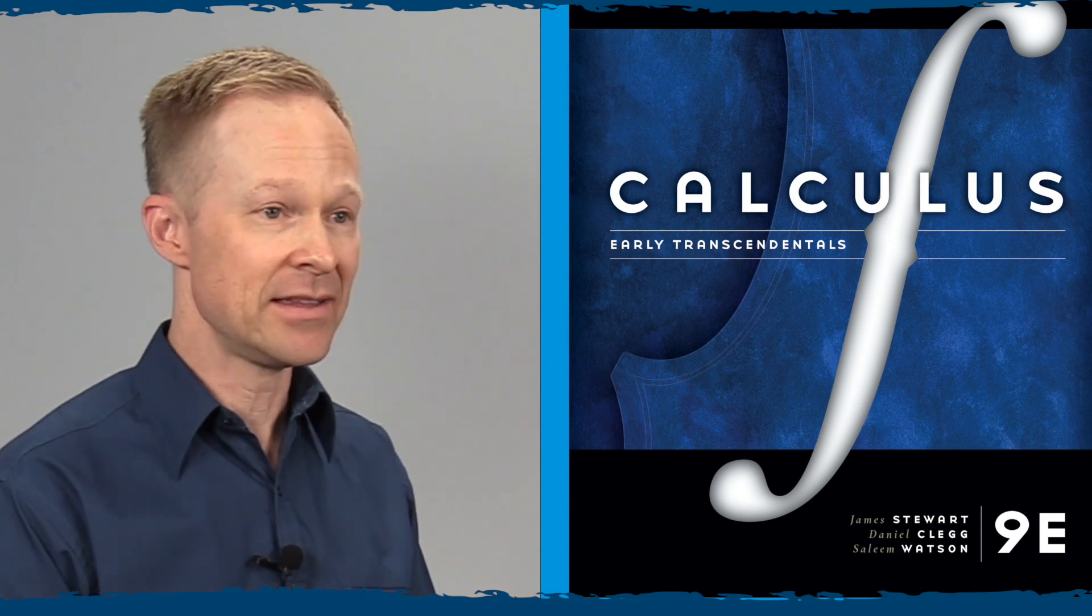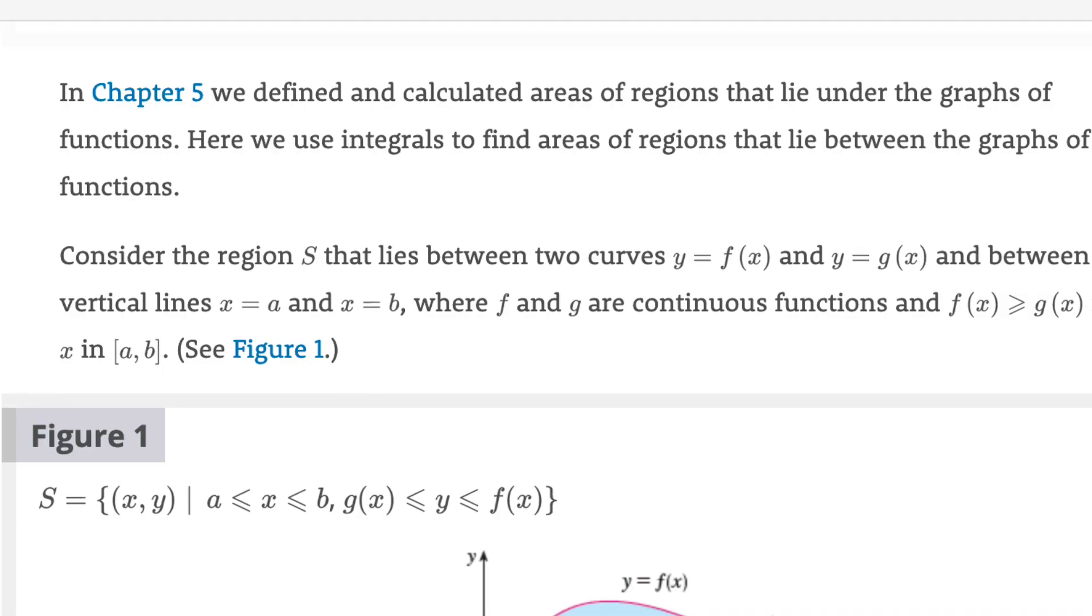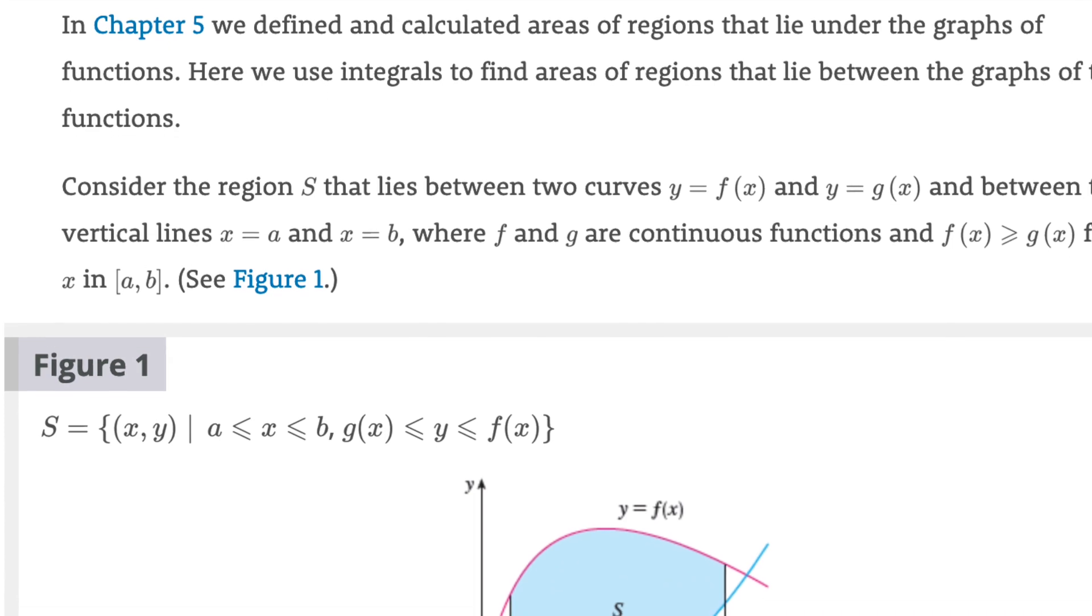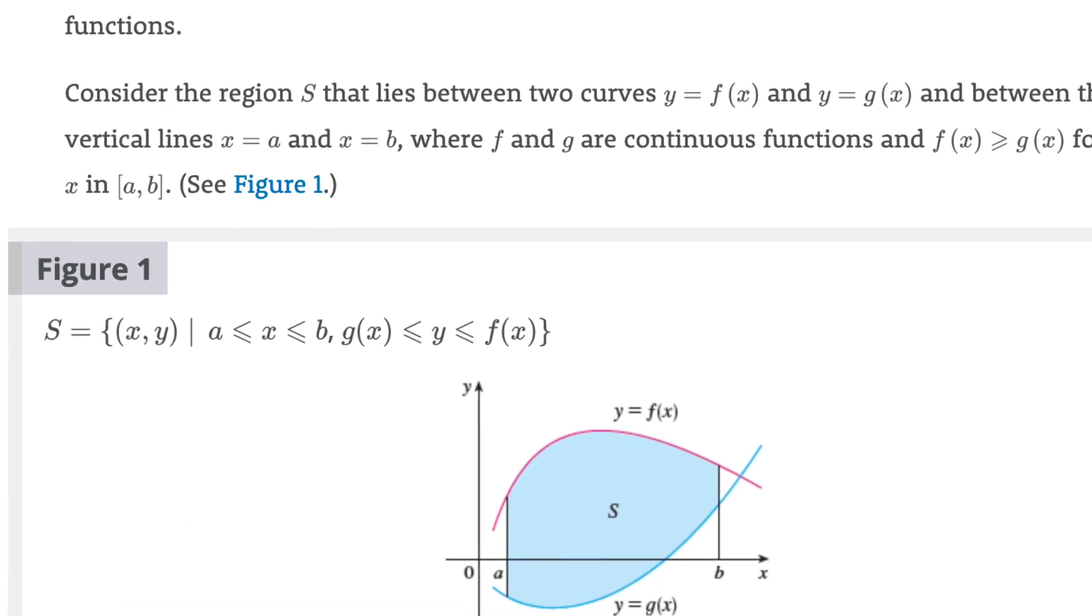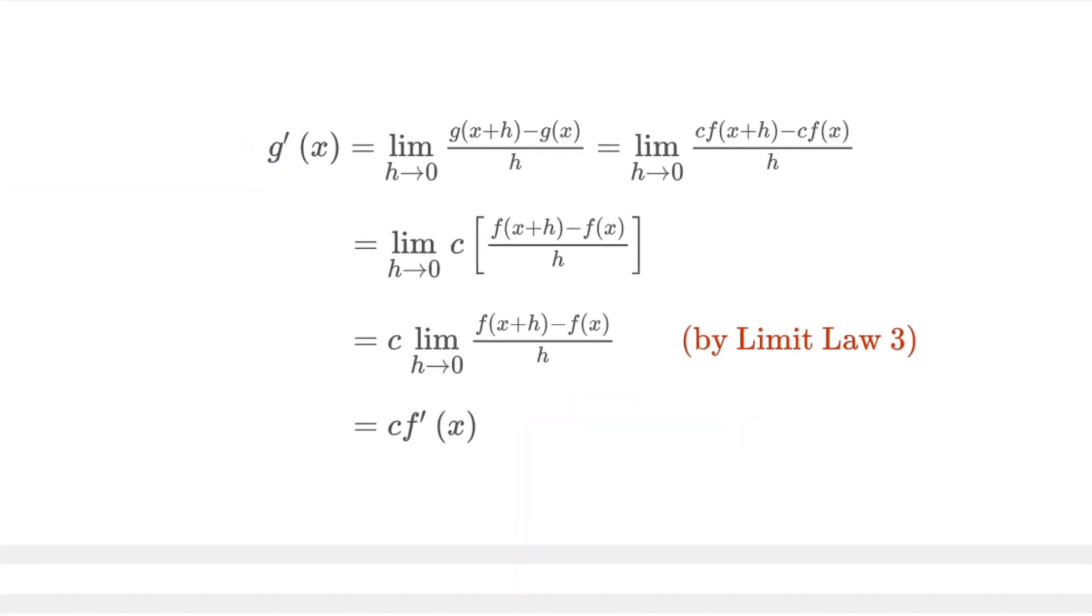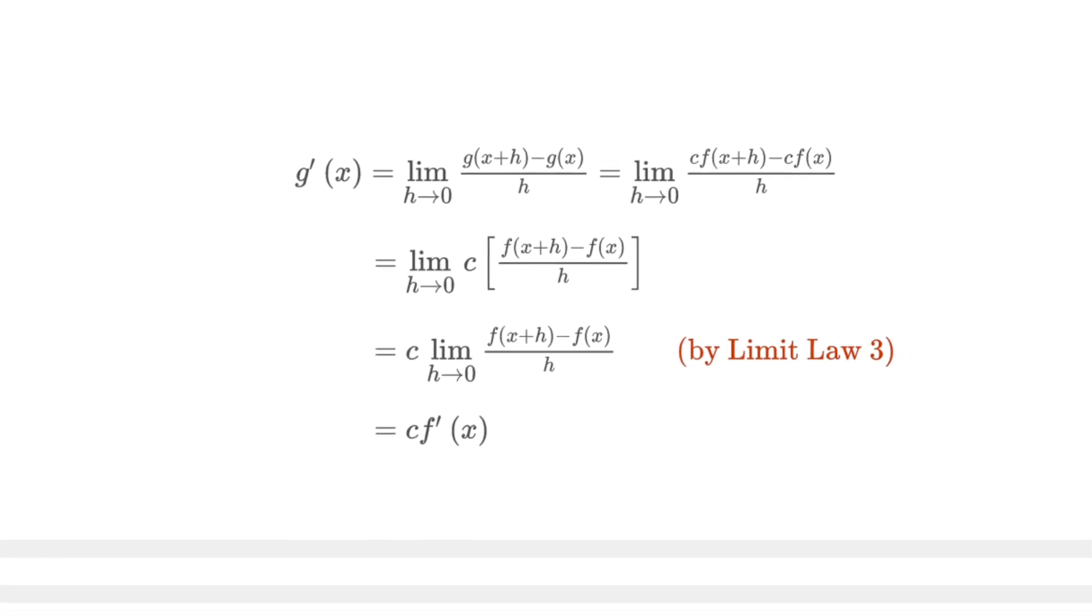It took him eight years to write the first edition, and that's working like 364 days a year. He would sweat every little detail and every little sentence. Every word was so carefully chosen. You can literally look at the book as an accumulation of thousands and thousands of tiny decisions that were all made.